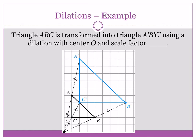Here's an example of a dilation with a triangle. Triangle ABC — the small black one in the bottom corner — is transformed into triangle A prime B prime C prime in blue, using a dilation with center O and a scale factor. The center O is down in the bottom corner, and it's enlarging the triangle — the image is bigger than the pre-image. All the angles stay the same, and the triangles are in fact similar. What's the scale factor? It's two.